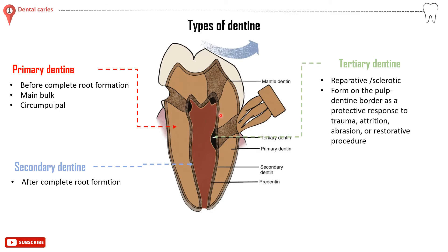Number three: tertiary dentine, also called reparative or sclerotic dentine. It forms on the pulp-dentine border as a protective response to trauma, attrition, abrasion, or restorative procedures. Areas of dentine where the tubules have been filled by mineralization produce a denser, radio-opaque dentine, which is the tertiary dentine.